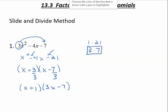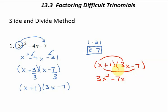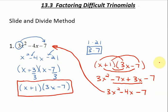Anytime we're factoring, we should be able to take our answer and multiply it back together and get what we started with. So we're going to check by foiling. Multiply the first two terms: that gives me 3x squared. The outer two: negative 7x. The inner two: positive 3x. The last two: negative 7. Combining like terms gives me 3x squared minus 4x minus 7, which is what I started with. So this is the correct factorization of that trinomial.